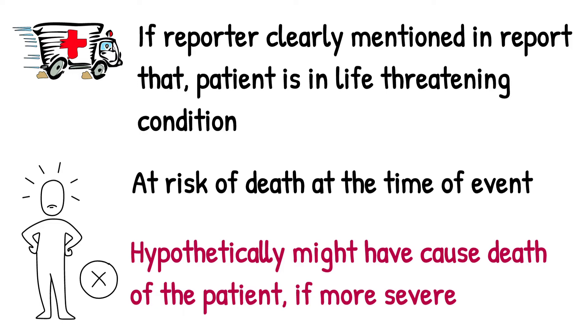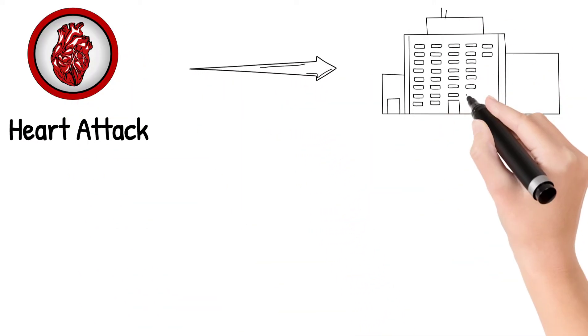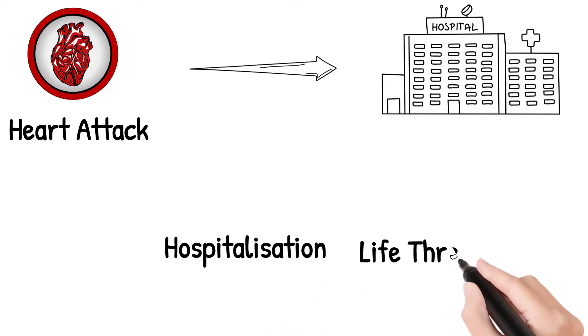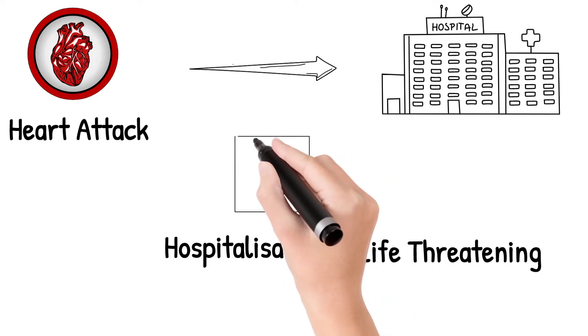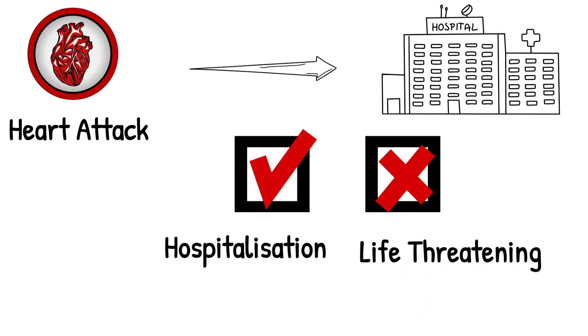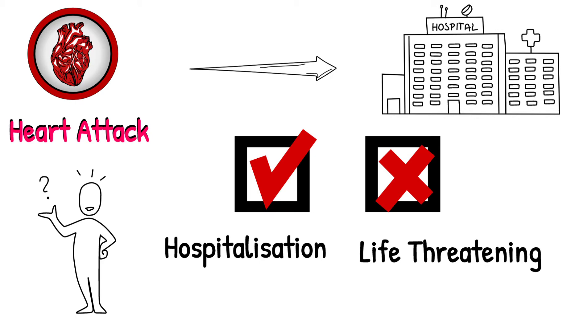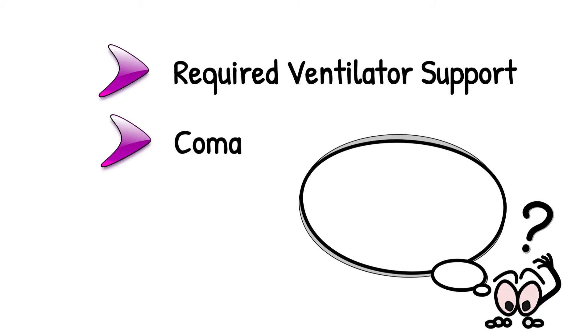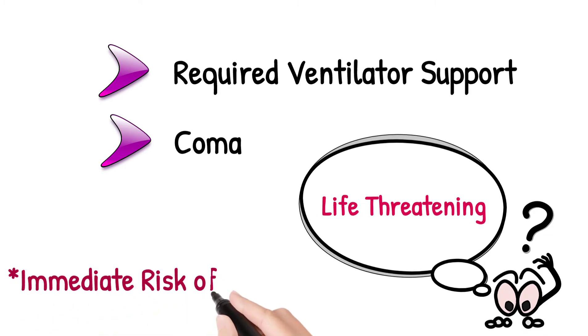Let me take one scenario to understand this. If a patient experienced a heart attack and was taken to the hospital, what is the seriousness criteria of the heart attack? The correct seriousness is hospitalization, not life-threatening — because if the heart attack hypothetically became more severe, it might cause death, but at present the patient is not at immediate risk of death. Another example: if a patient requires ventilator support or the patient is in a coma, then the event should be considered as life-threatening, considering the patient was at immediate risk of death at the time of the report.